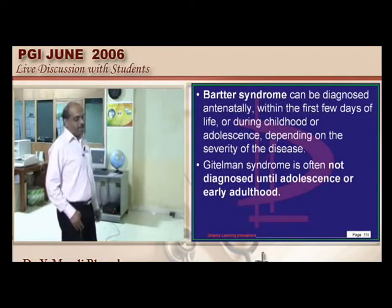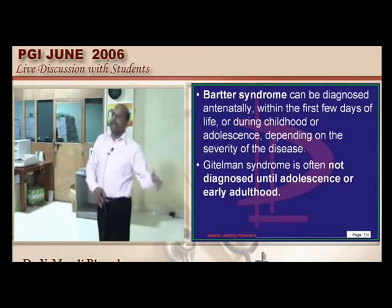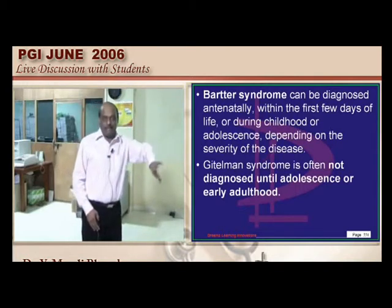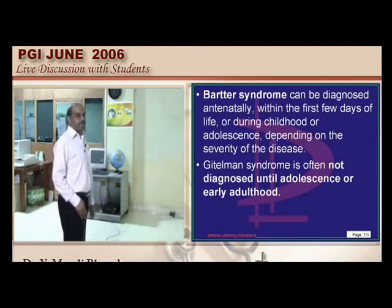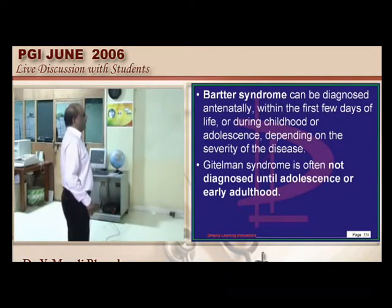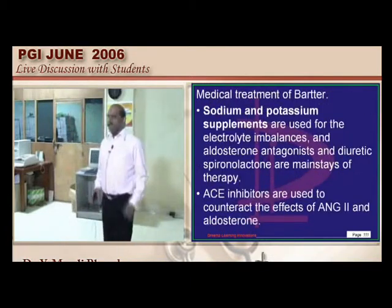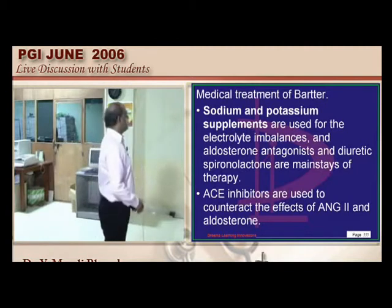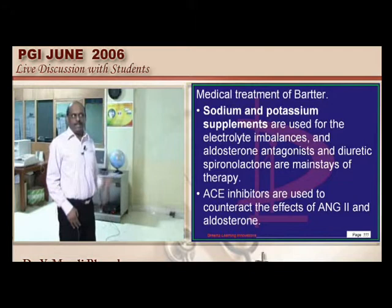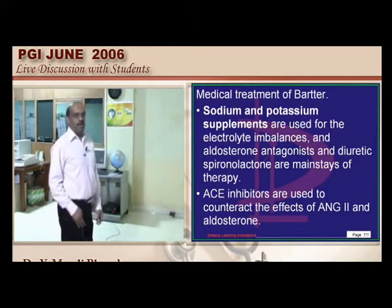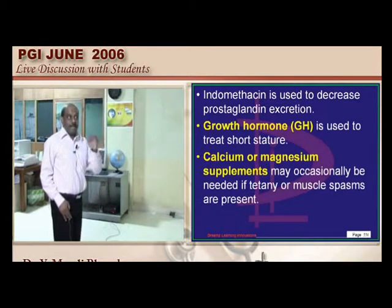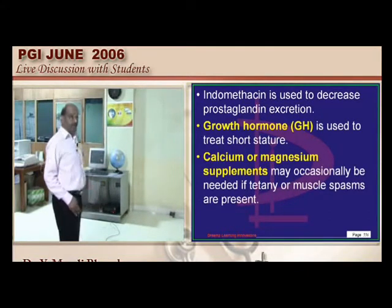Age of presentation: Bartter typically presents antenatally or in childhood with growth retardation; Gitelman presents in early adulthood. Treatment of Bartter: sodium and potassium supplementation, spironolactone to counter excess aldosterone, ACE inhibitors to counter excess angiotensin II, indomethacin to counter excess prostaglandins, growth hormone to improve stature, and calcium and magnesium supplements.